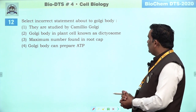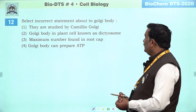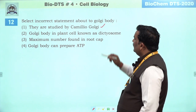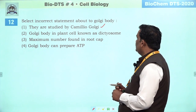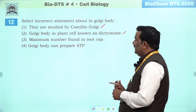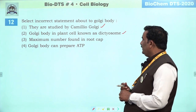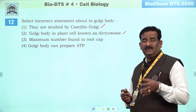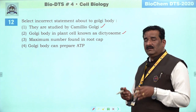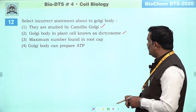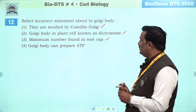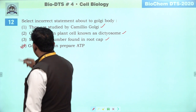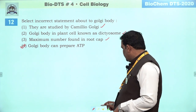Next question: select incorrect statement about Golgi body. They are studied by Camillo Golgi — yeh sahih hai. Golgi body in plant cell non-age dictyosome — yeh bhi ek acha statement hai, sahih hai. Maximum number found in root cap — root cap pe zyada presence isliye hoti hai kyunki soil ke andar penetrate karna hai — yeh bhi sahih hai. But Golgi body are not related with ATP formation — means incorrect statement is fourth. Fourth is the right answer.